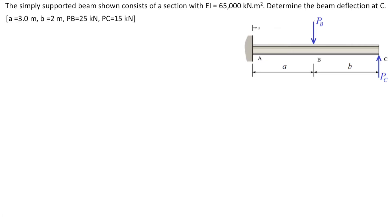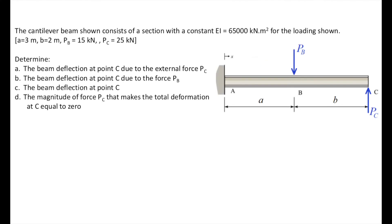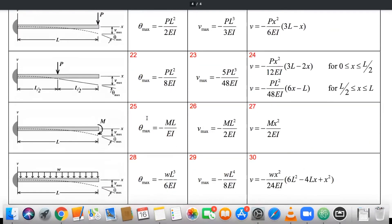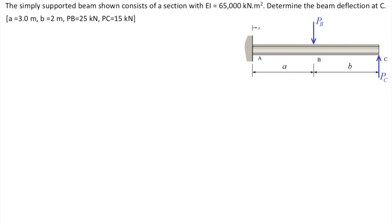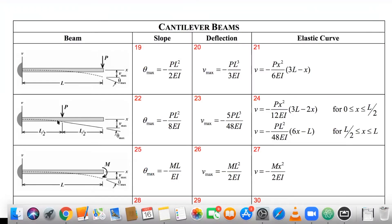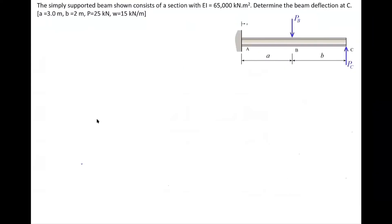First, I need to find a matching beam on the table. If I go to the table, there is no matching beam with exactly that configuration of loading. We do have loading at the end of the beam and loading at the middle, but not the case of two loads in opposite directions. Also, this force is not exactly at the middle of the beam because A and B are not the same — in my case, A is 3 meters and B is 2 meters. So I cannot use that equation for the force acting at B. To solve this problem, I'm going to split it into two beams.